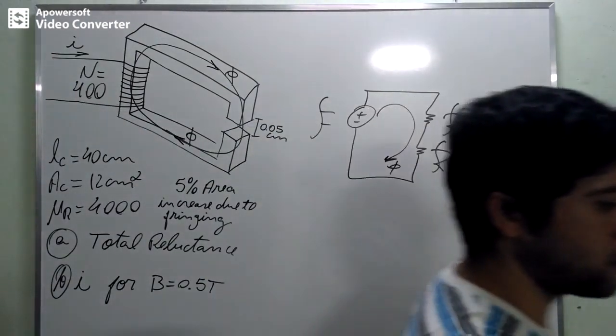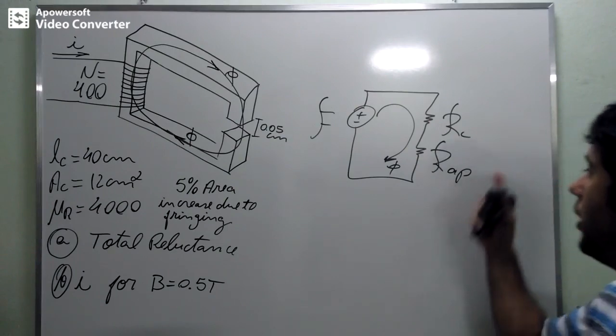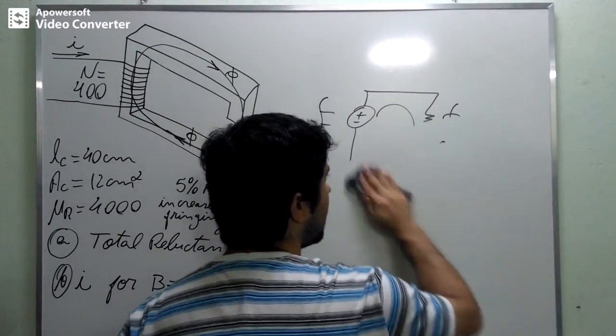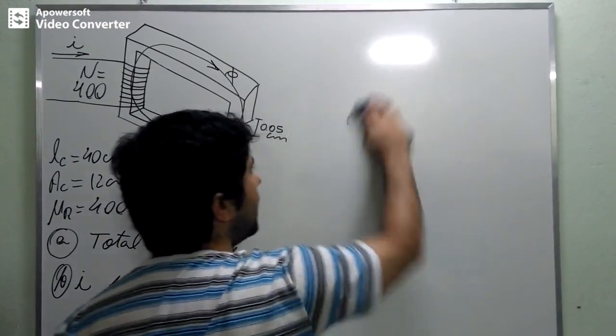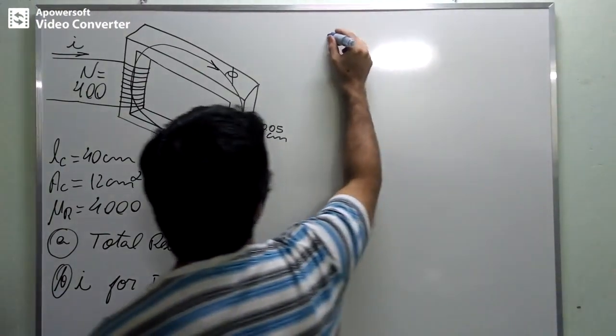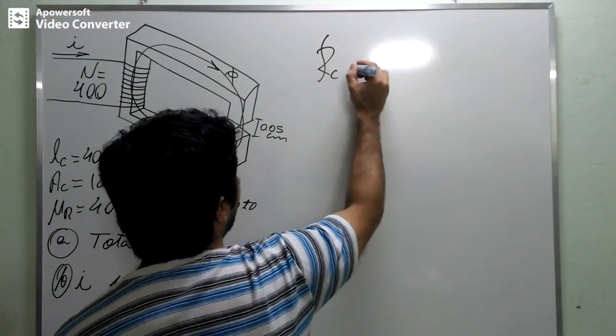What the problem wants us to calculate is the reluctance of the core and the air gap. And we are going to use that now. How to calculate the reluctance of the core?